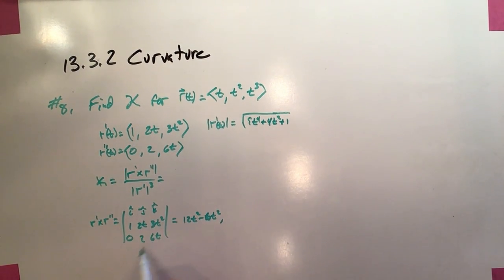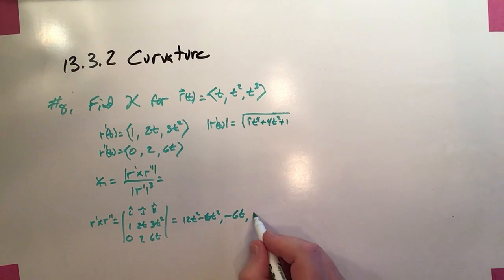My middle component is going to be negative, and it's going to be 6t minus 0. So it's negative 6t. And finally, the k, or the z component, is going to be 2 minus 0, or 2.